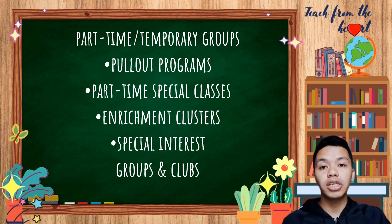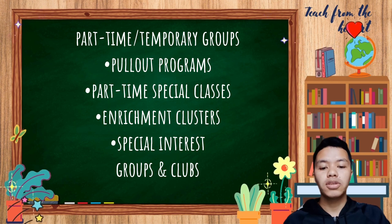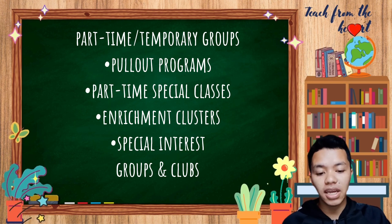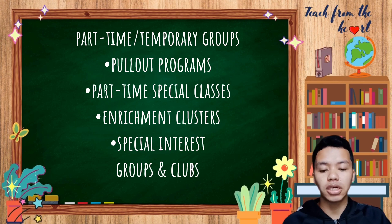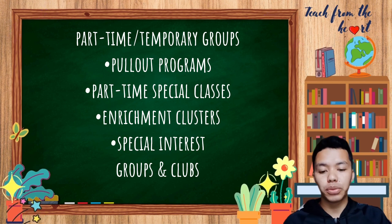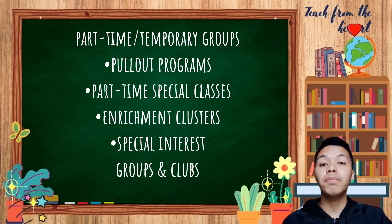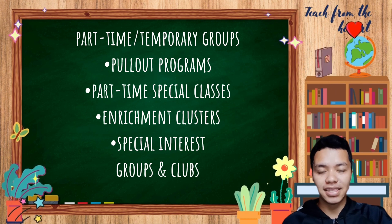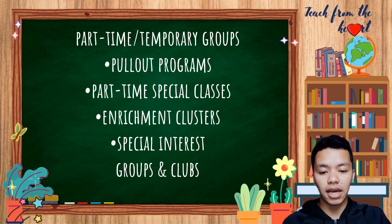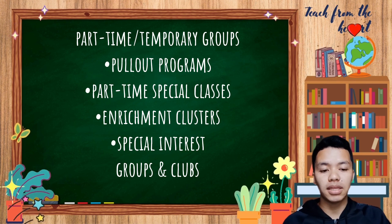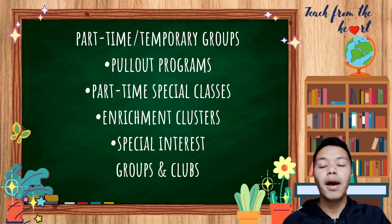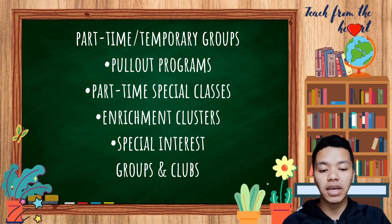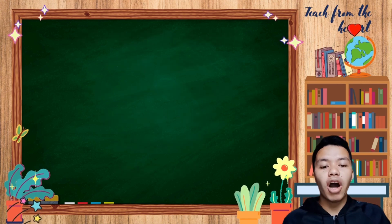Part-time special classes offer gifted and talented learners 50% to 70% of the regular curriculum, focusing on independent projects, research, accelerated subjects, and small group collaborations to enhance creativity and higher-level thinking. Enrichment clusters are groupings for learners with common interests such as journalism, literature, engineering, or baking, where they meet with experts for 6 to 12 weeks. Special interest groups and clubs, popular among secondary students, offer enrichment activities in clubs like drama, chess, mathematics, and religion, where high school students apply for membership and a club advisor assesses their skills.